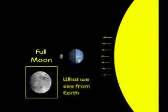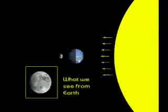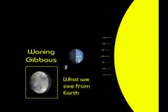Now the Moon starts to look smaller, and the next phase is called Waning Gibbous. Waning means to get smaller.